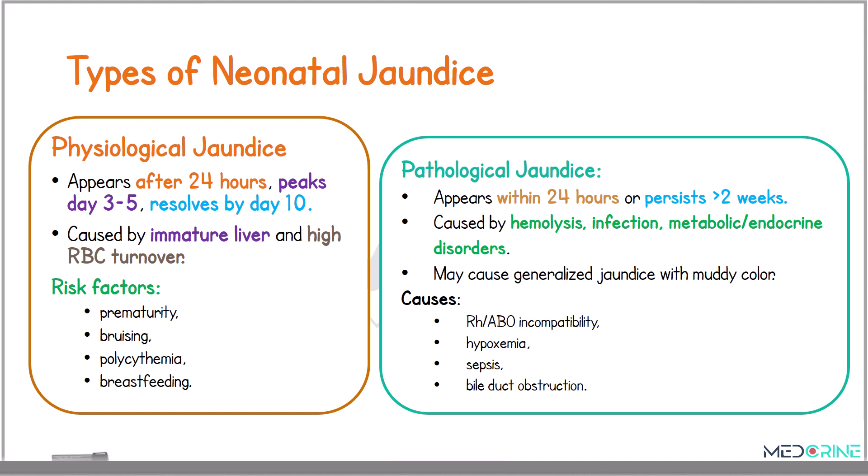We have two types of neonatal jaundice: physiological jaundice and pathological jaundice. Physiological jaundice is a type that occurs after 24 hours of delivery, peaks at 3 to 5 days, and resolves by the 10th day. It is usually caused by an immature liver in the presence of a high red blood cell turnover.